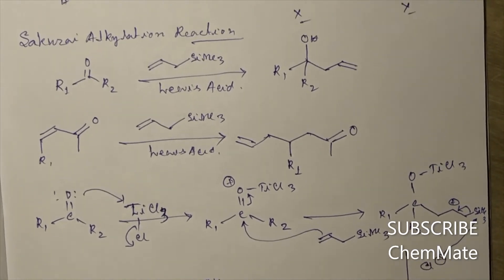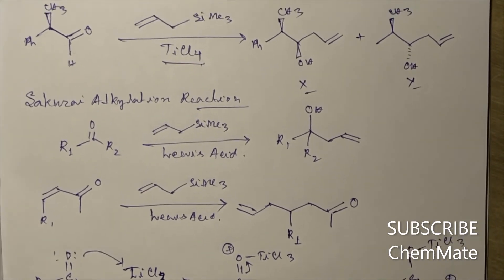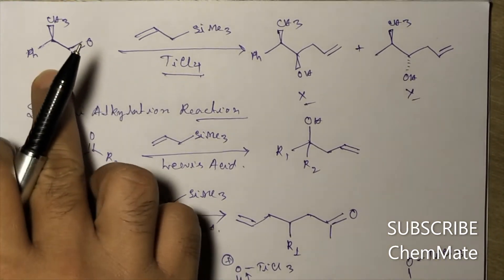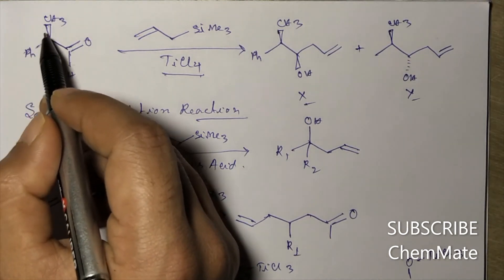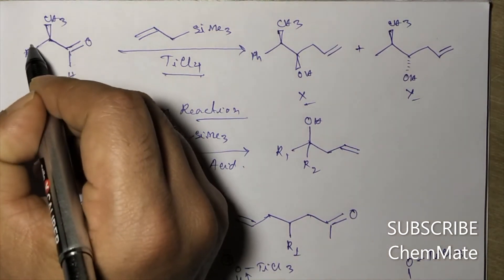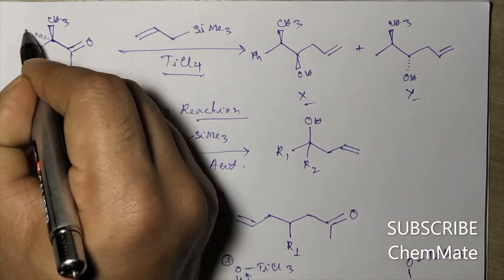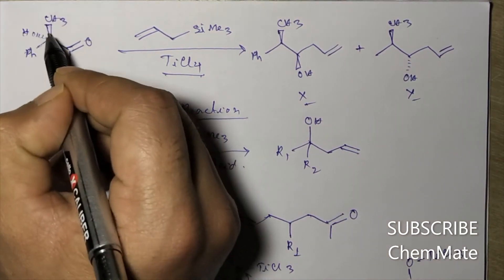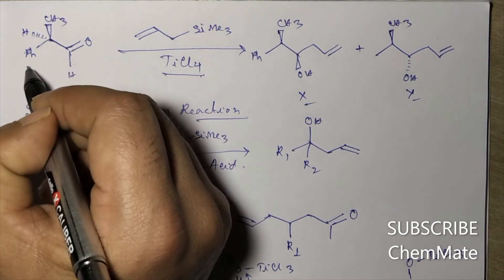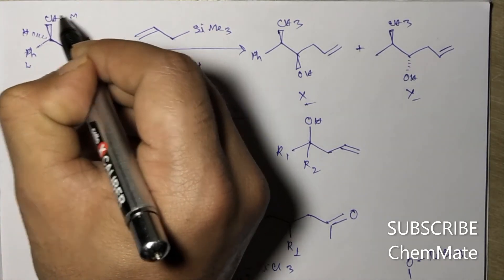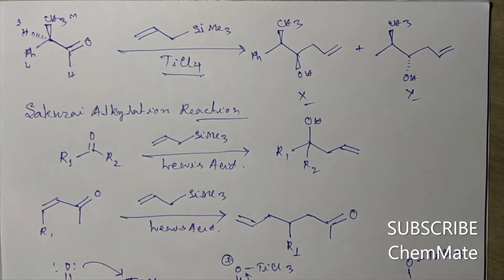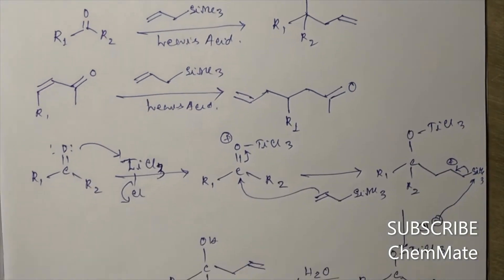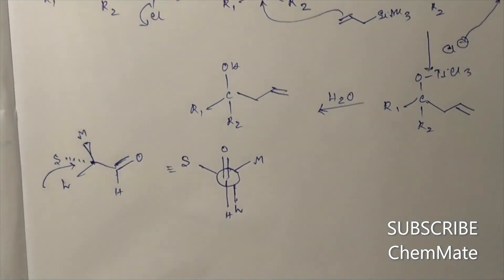In our case, our substrate has a phenyl group, CH₃, and a hydrogen at the alpha carbon. So phenyl is large, CH₃ is medium, and hydrogen is small. The preferred conformation from which the reaction will take place will be drawn accordingly.